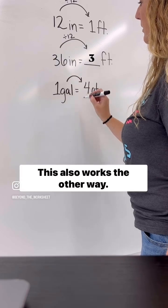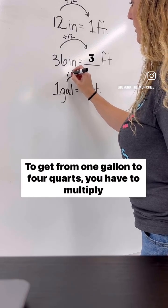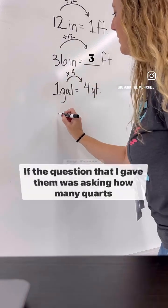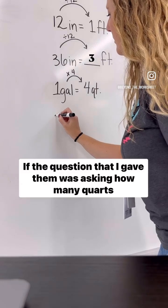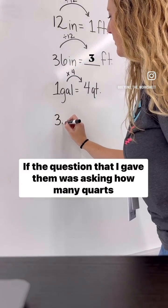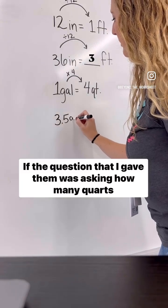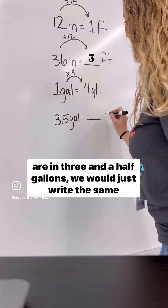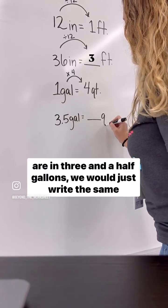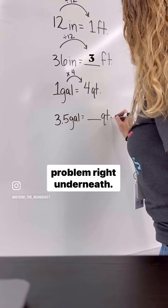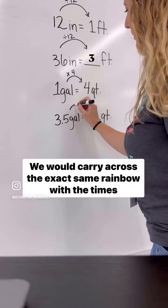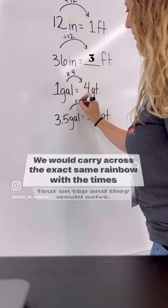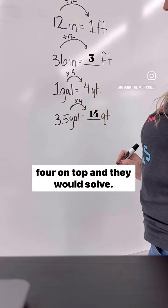This also works the other way. To get from 1 gallon to 4 quarts, you have to multiply by 4. If the question was asking how many quarts are in 3½ gallons, we would just write the same problem right underneath. We would carry across the exact same rainbow with a times 4 on top, and they would solve.